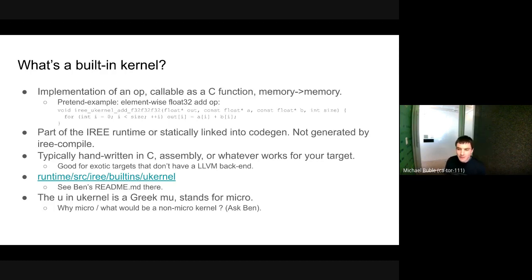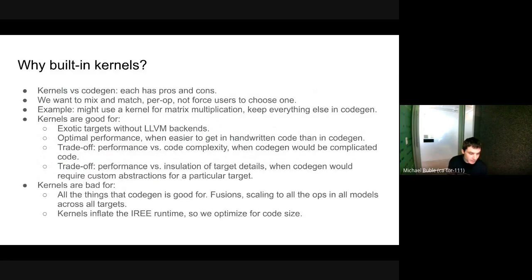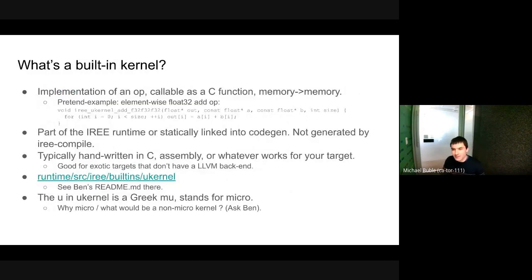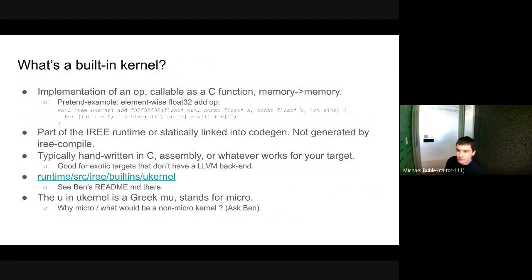Being handwritten, it can be motivated by either performance optimization or targeting targets that don't have an MLIR backend. We'll get more into the pros and cons later. They reside in the source directory in ERI. Ben wrote a nice readme there which you could read. I call these things kernels; most people call them micro-kernels. But before I call them micro-kernels, I'd like to ask: if this is a micro-kernel, what would be a non-micro-kernel? I honestly didn't know. So if you want to discuss that now, we can, but otherwise I would call them kernels.